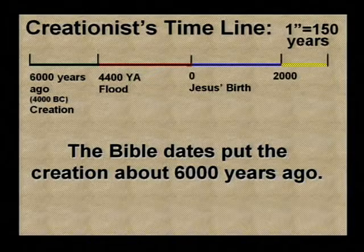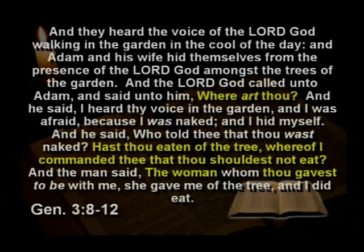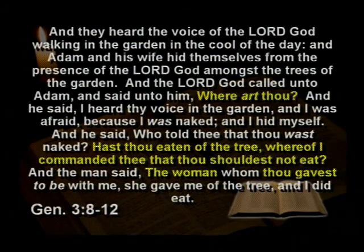The Bible teaches the world was created about 6,000 years ago and God made a perfect creation. Dinosaurs lived with Adam and Eve. Then God put a curse on the ground because of their sin. He said, 'Adam, have you eaten of the tree that I commanded you should not eat of?' Adam's first response was to pass the buck: 'The woman that you gave me' — trying to blame God. She finally reluctantly confessed, saying the serpent tricked her and she ate.